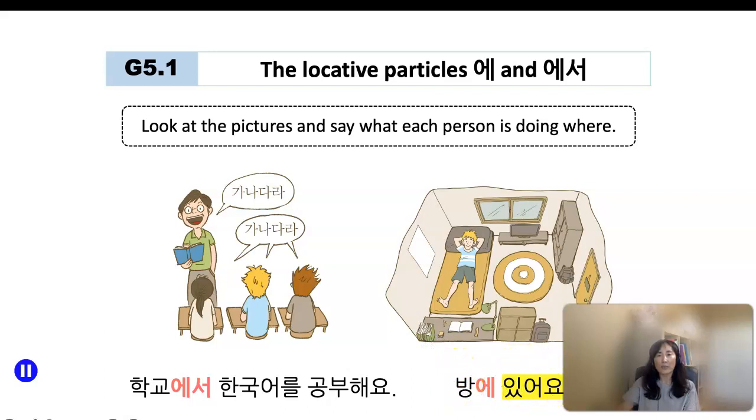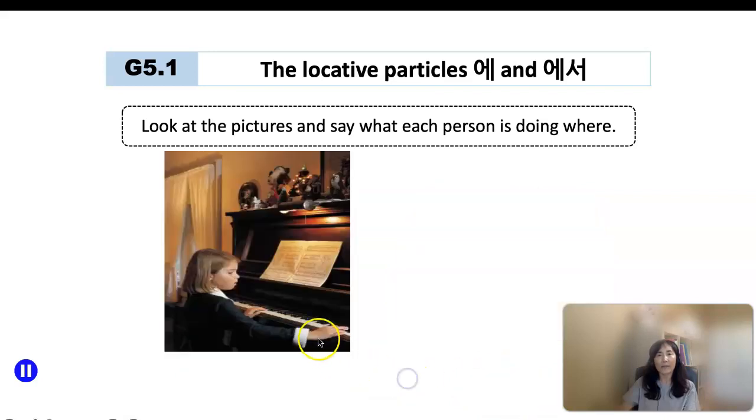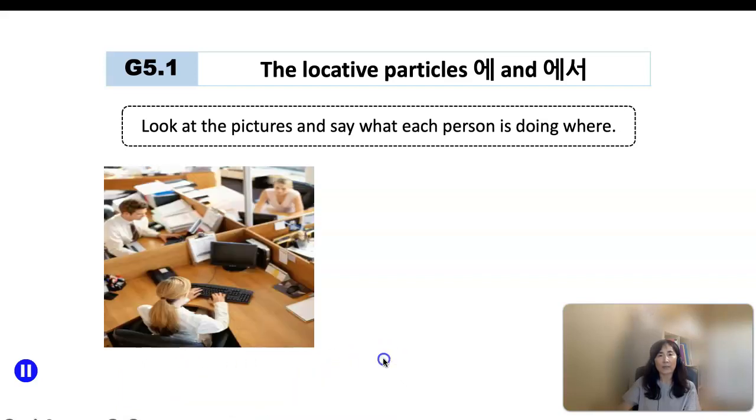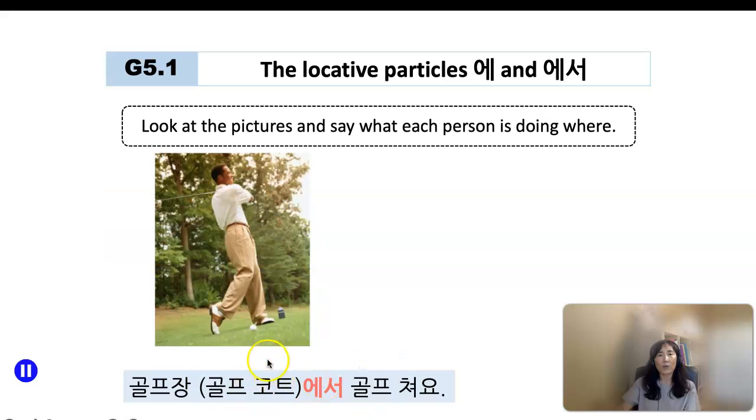집에서 피아노를 연습해요. So she's practicing piano at home. 집에서 피아노를 연습해요. 헬스장에서 운동해요. Exercising at the health club. Office에서 일해요. Working at the office. 골프장에서 골프를 쳐요. Playing golf at the golf club.